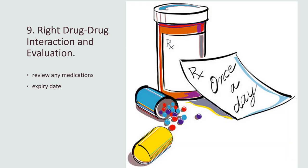Ninth is the right drug-to-drug interaction and evaluation. Review any medications previously given and the diet of the patient that can yield a bad interaction with the drug to be given. Also check the expiry date of the medication being given.